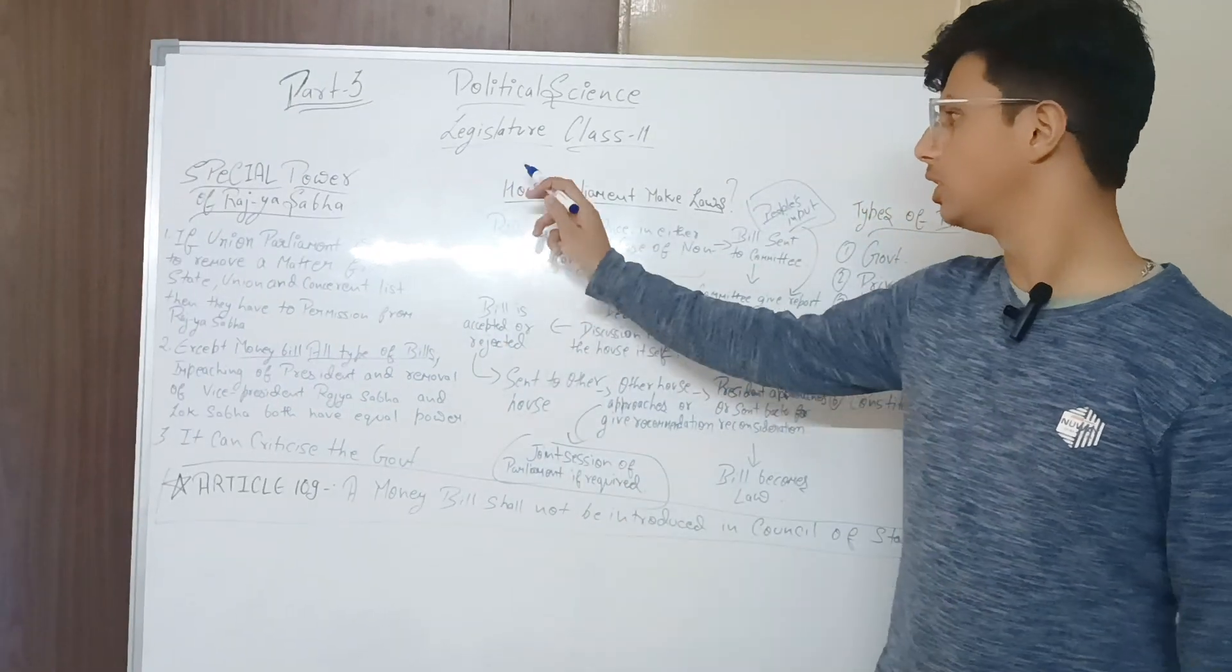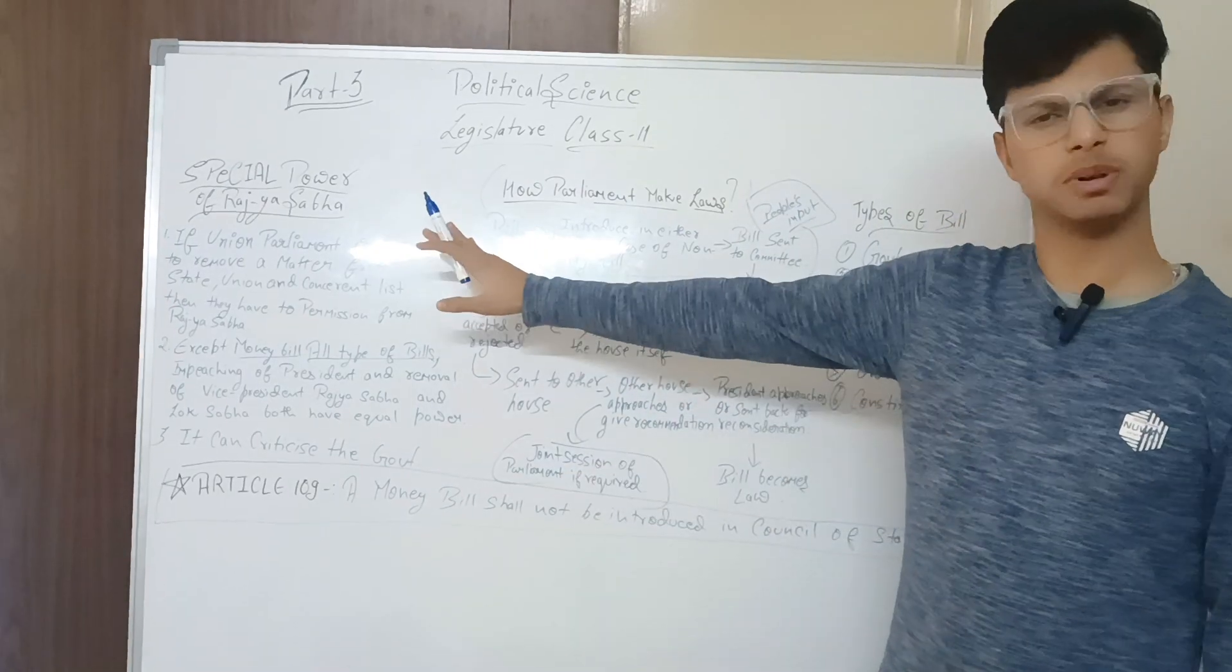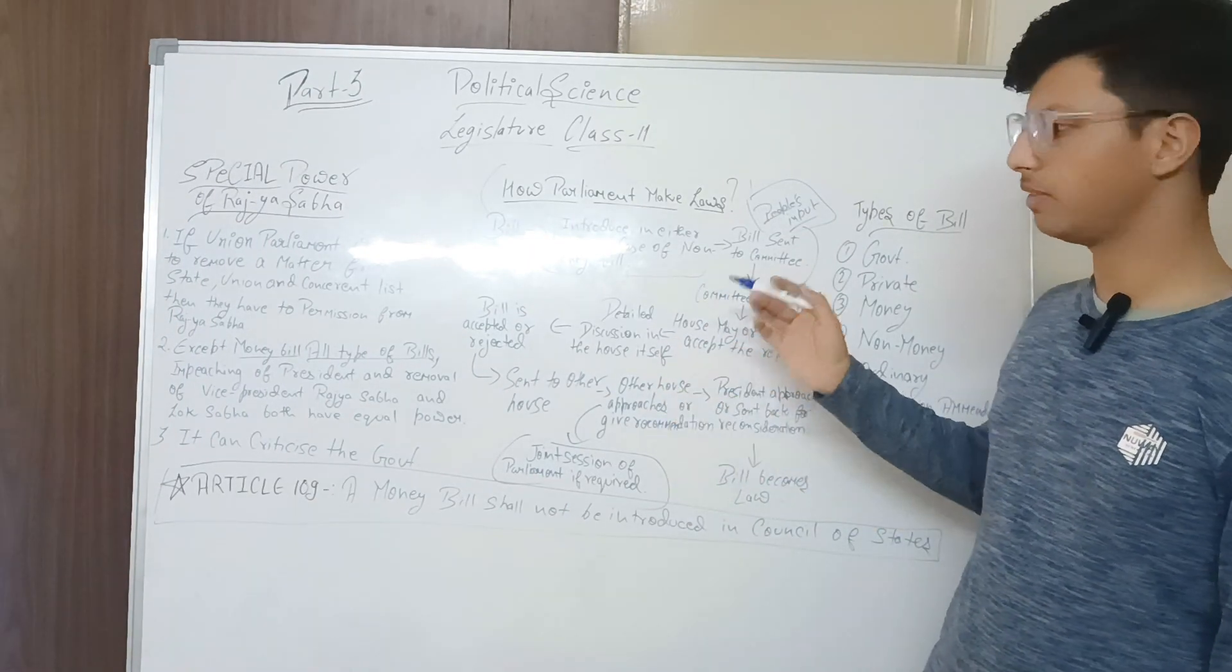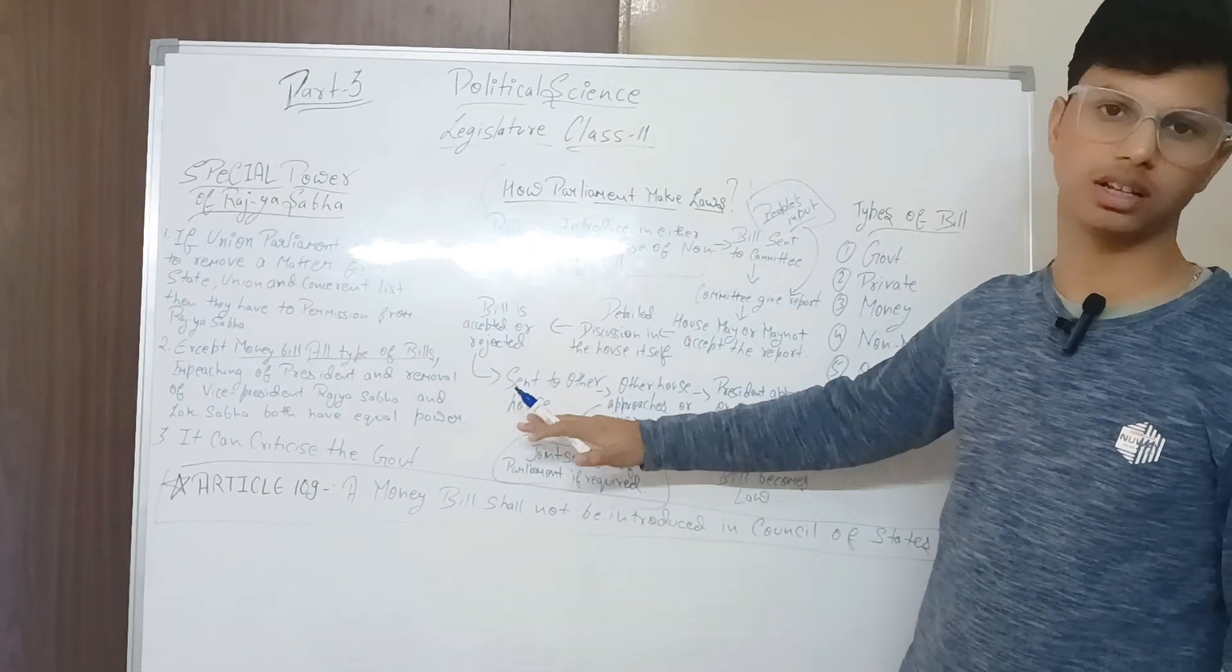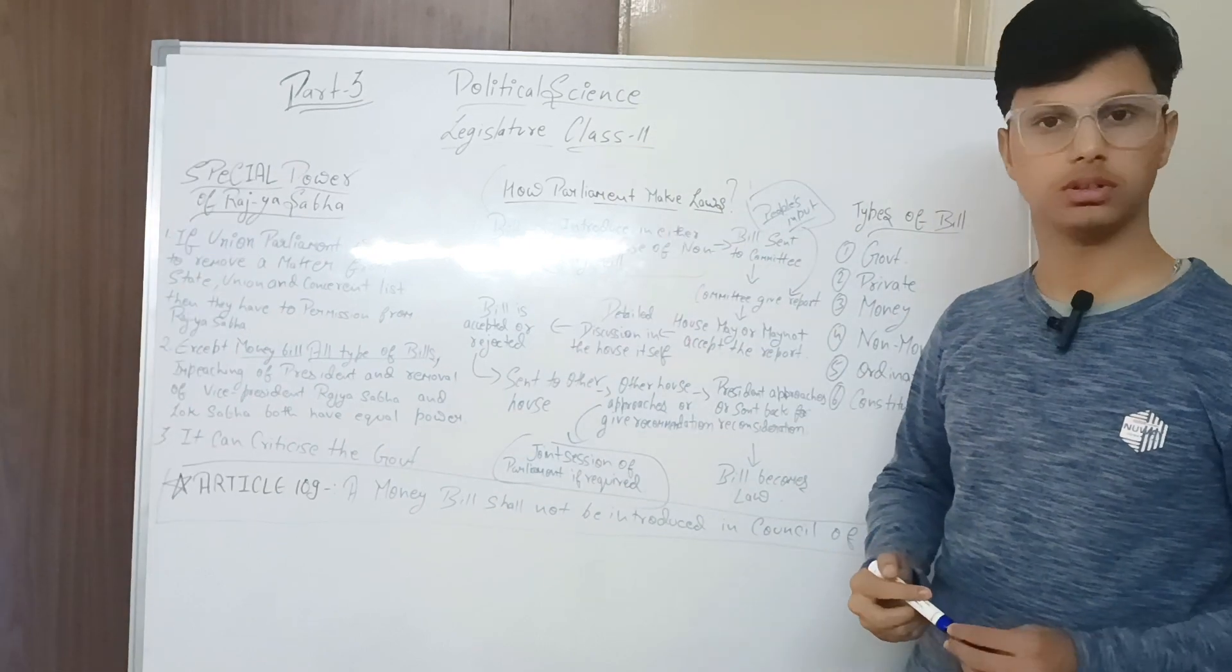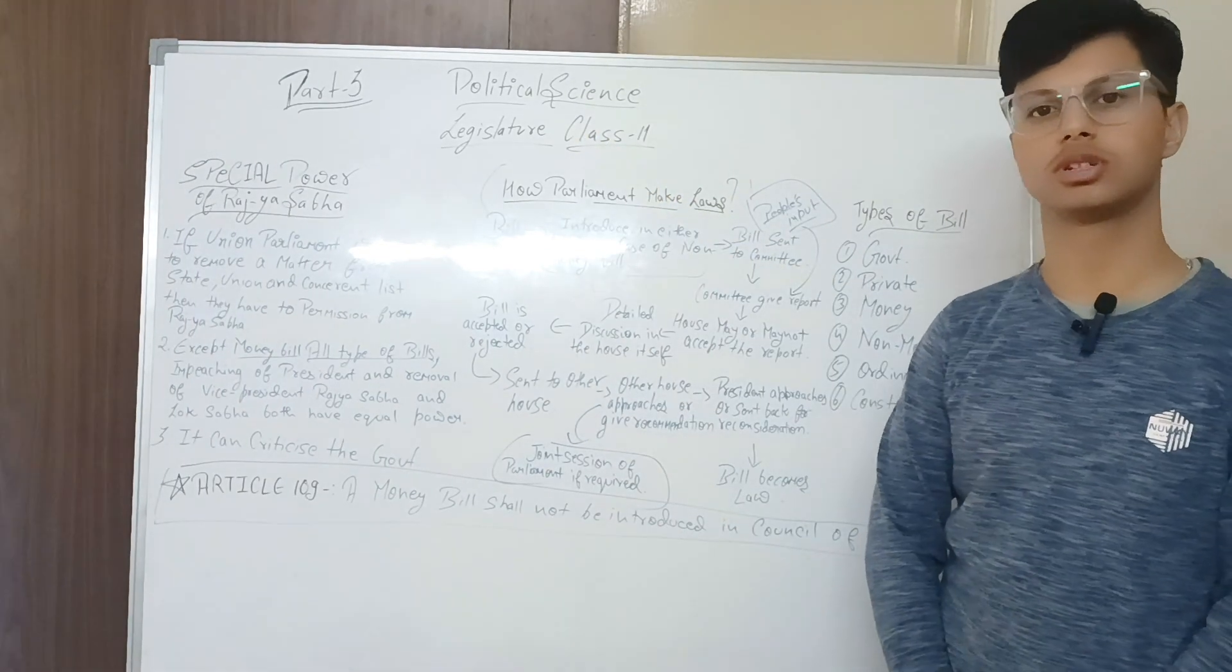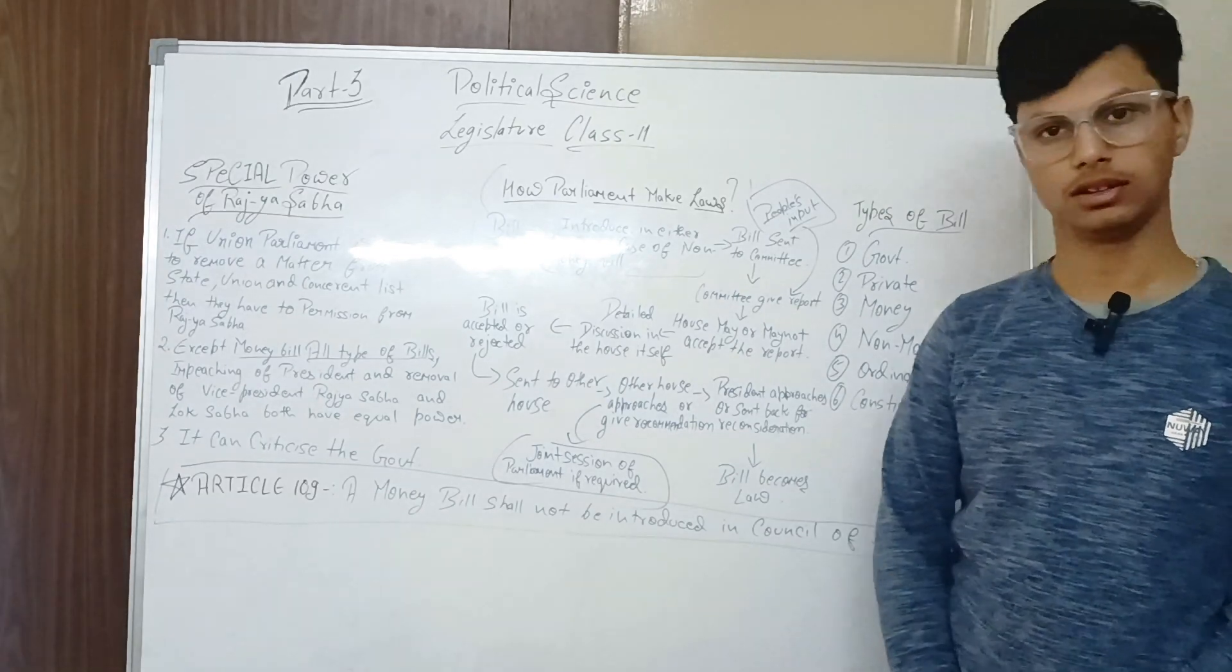So this is the whole chapter. This topic is very important. Special powers of Rajya Sabha are normal, you can remember them. Government, non-money, money, private bills - these are all normal, remember them. But this topic always comes in exams, approximately 6 marks or 5 marks. Thank you so much. If you liked the video, please like, share, and subscribe. Thank you and sorry the video is very late due to some conditions. Videos will keep coming. Thank you so much.